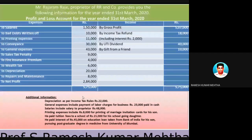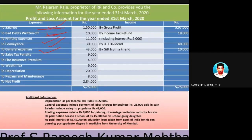Now let's take the third problem for the day — a profit and loss account for financial year 2019-20. Salaries are allowed; bad debts written off is an allowed expenditure since bad debts are bound to occur in business; printing expenses are allowed; conveyance is allowed; general expenses are allowed. Sales tax penalty is not allowed because you are penalized by authorities for a mistake. Fire insurance premium is allowed. Wealth tax is not allowed. Depreciation is allowed. Repairs and maintenance are allowed.